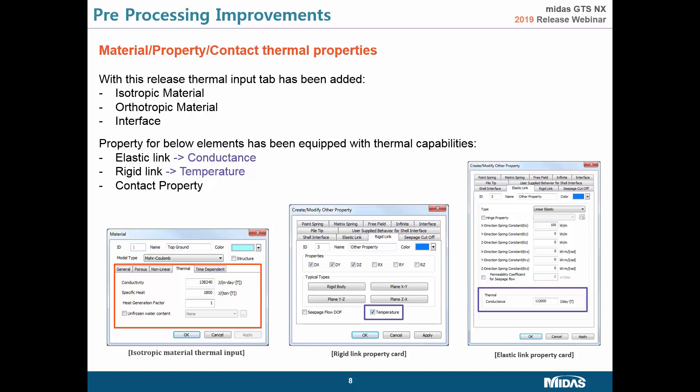Parameters have also been added to properties. For rigid or elastic links, we can find new parameters. If we want to use a rigid element to conduct temperature in our model, we simply click the option and the temperature will be propagated along the length of the element. For elastic links, the parameter has a unit, so you have to specify how much energy you want to spread out.